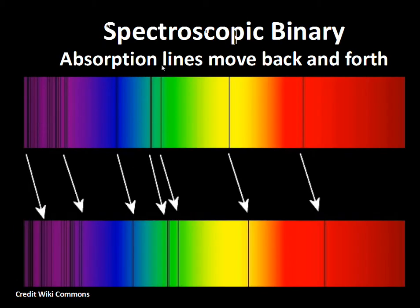We're talking about a spectroscopic binary system. In this system, you can't see the separate two stars. What you see are the spectra — you have two sets of absorption lines. These absorption lines will shift back and forth. When one star's absorption lines are going towards the red, its companion star's absorption lines will be going towards the blue. The two stars orbit a common center, and when one star is coming towards the Earth, the other star is going away from the Earth.